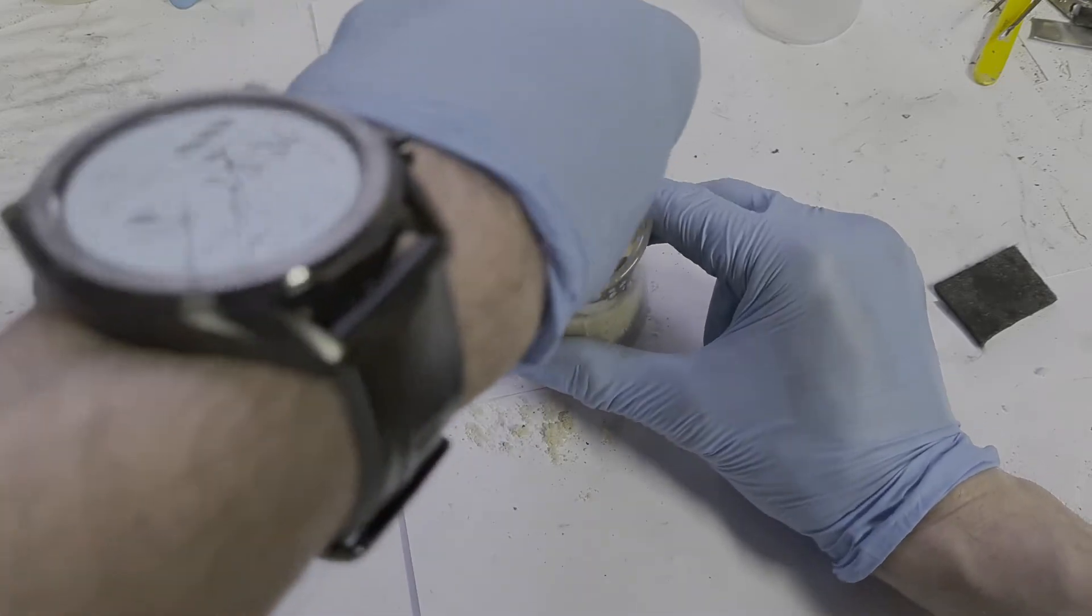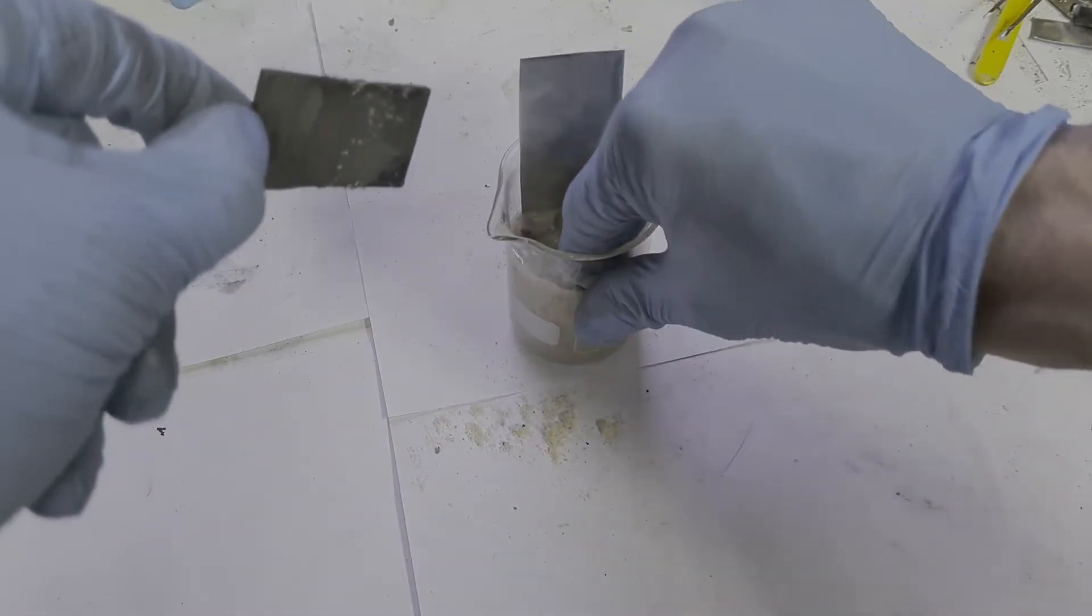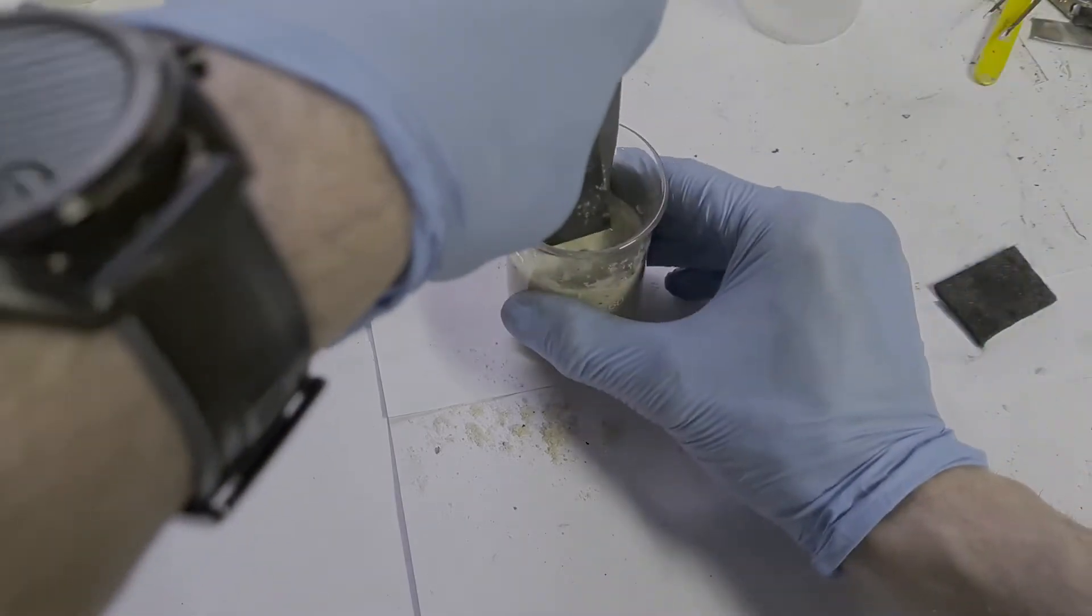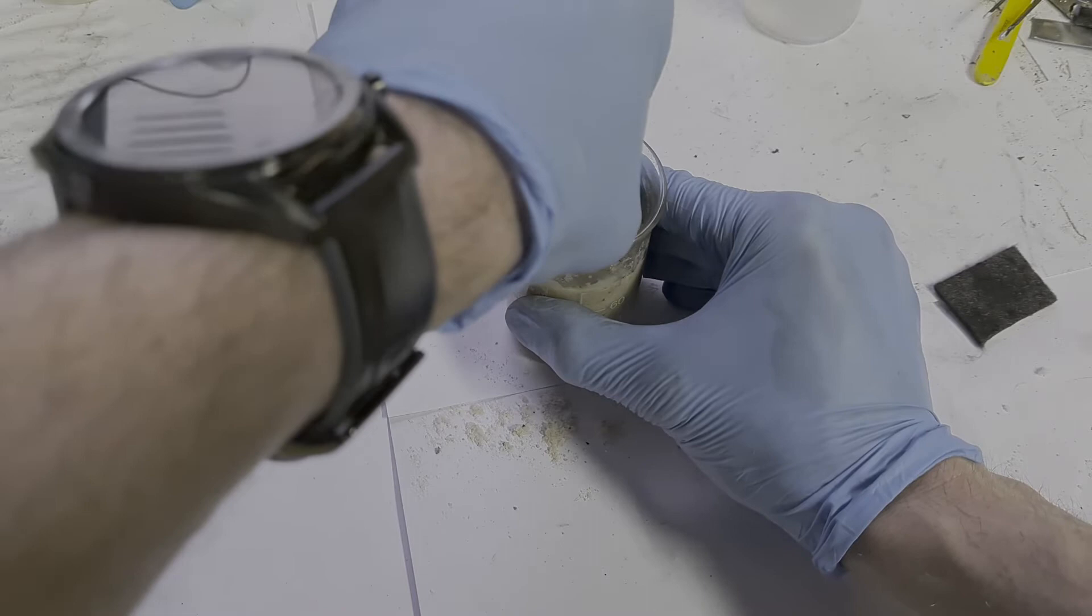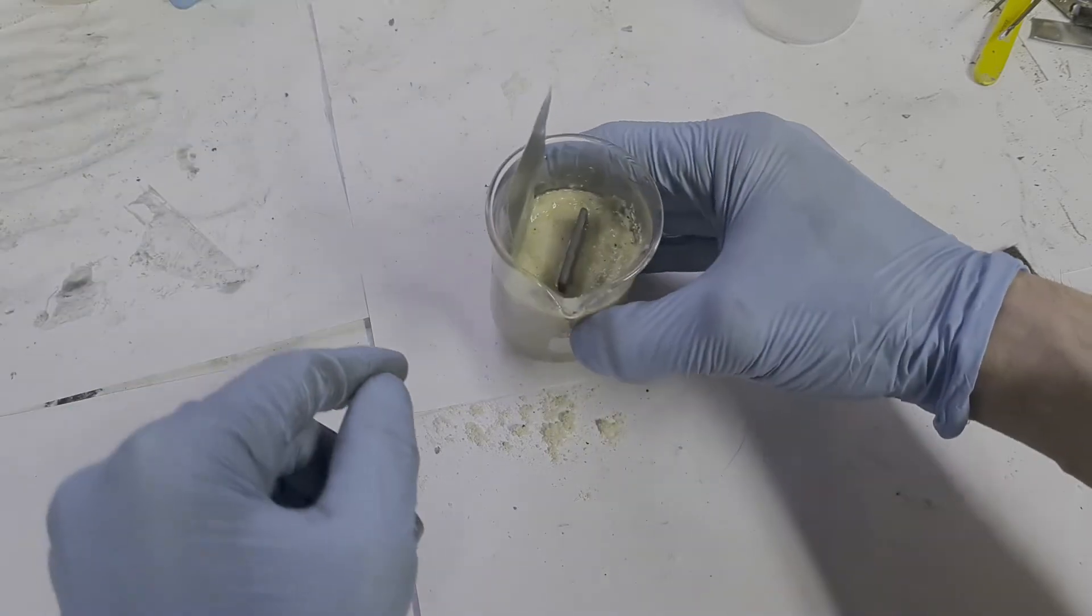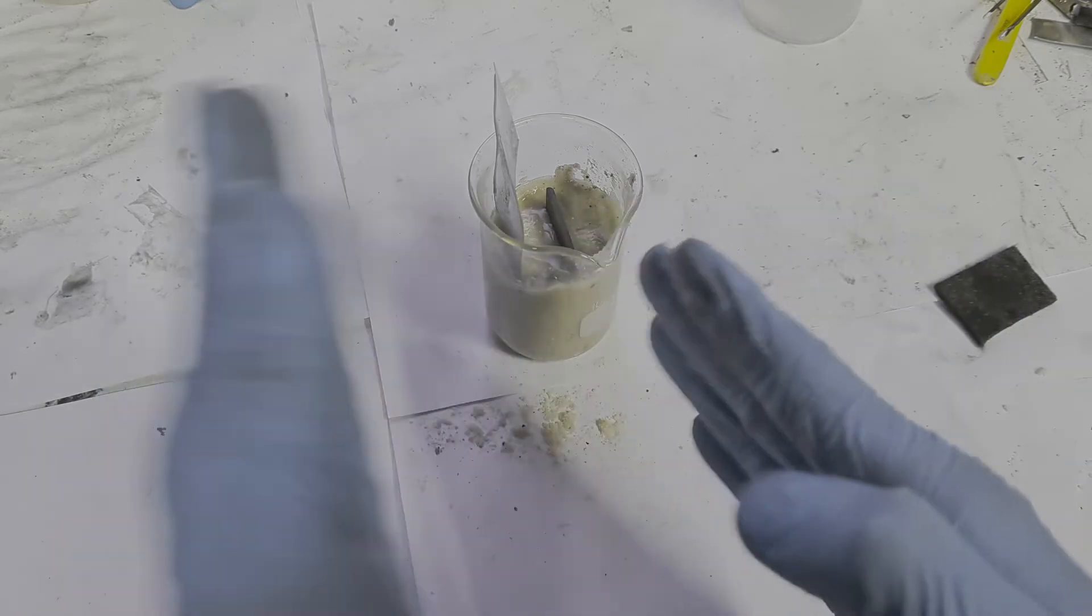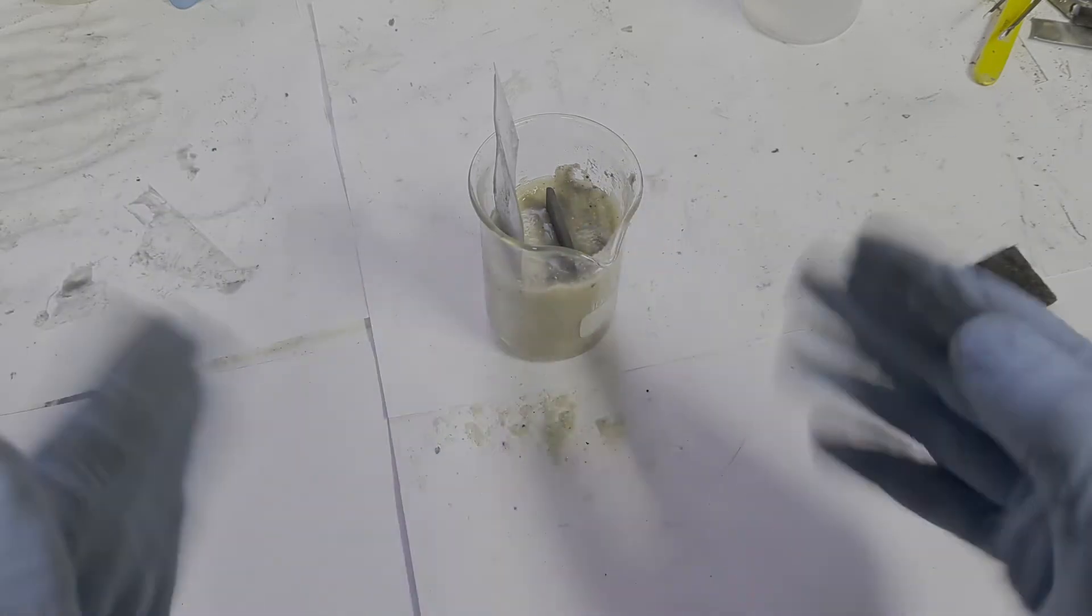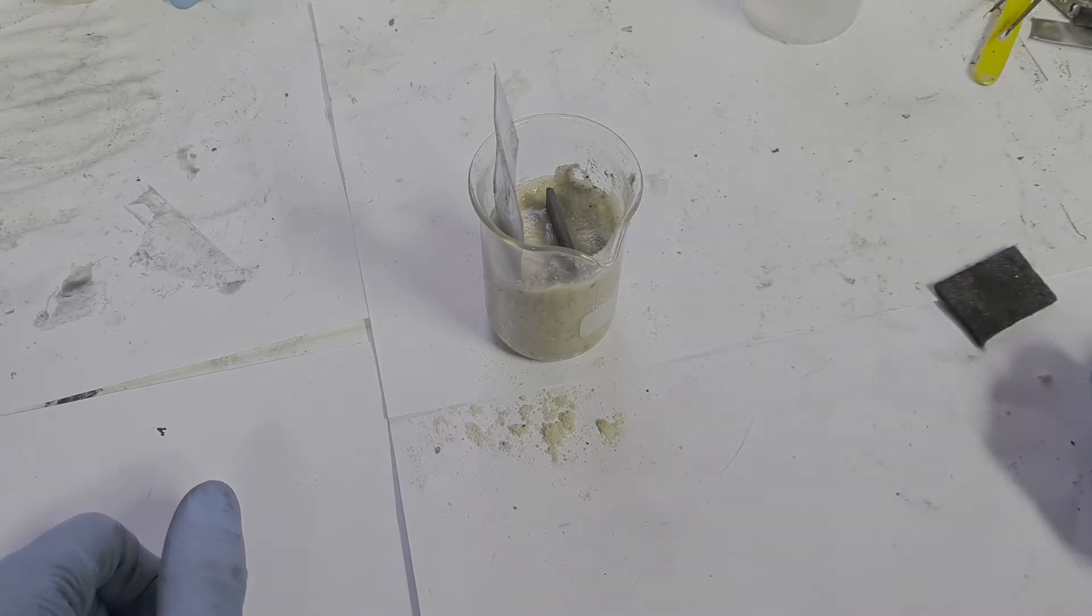So actually I will put the positive a little bit more closer to the negative. Because the closer the positive and the negative electrodes are, the more power you will get out from this cell.